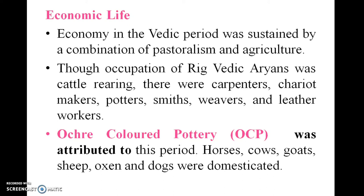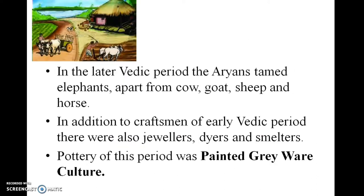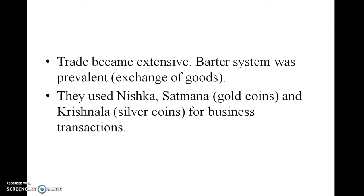The painted grey pottery was attributed to this period. Horses, cows, goats, sheep, asses, and dogs were domesticated. In the later Vedic period, Aryans also tamed elephants. In addition to craftsmen of the early Vedic period, there were also jewelers, dyers, and smelters. Pottery of this period was called Painted Grey Ware Culture. Trade became extensive and barter system was prevalent. They used Nishka and Shatmana as gold coins and Krishnala as silver coins for business transactions.